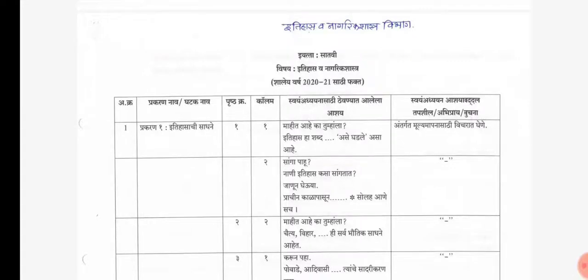Hello everyone, I am Professor Daniel Moraes from Sayusha Academy and today I will be telling you all your reduced syllabus for History and Civics Standard 7. We go on to chapter number 1.